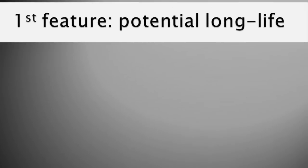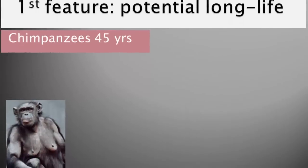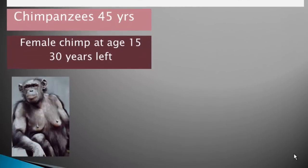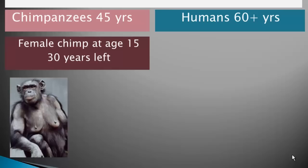One feature is that humans have the potential for a longer life than other primates. Chimpanzees in the wild, for example, have an average life expectancy of 45 years. When a chimp female reaches age 15, she has 30 years left to reproduce and have children, and on average she's going to die around her mid-40s. Human females in traditional societies, on the other hand, have a life expectancy of 60 or more years, and in some societies human females have been known to live as long as 120 years.